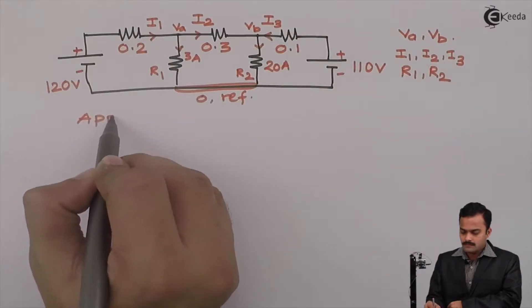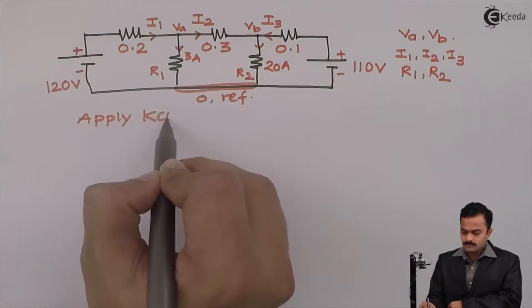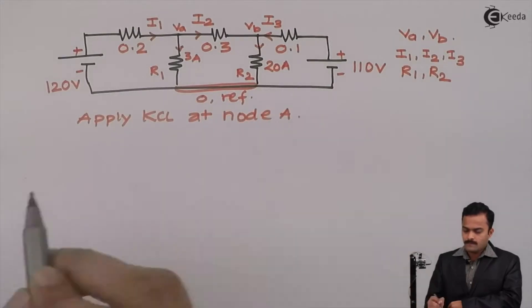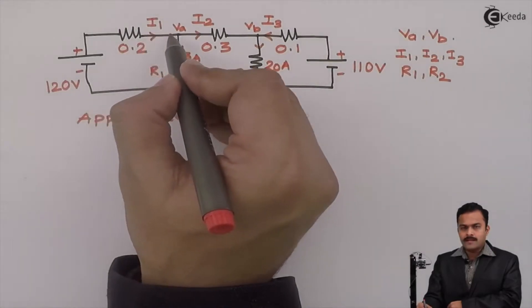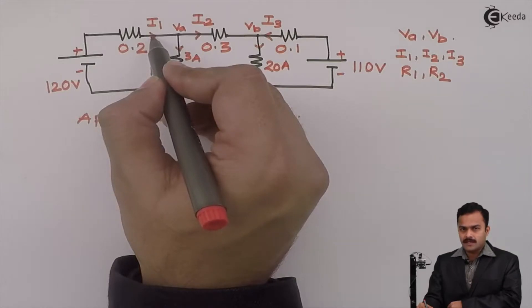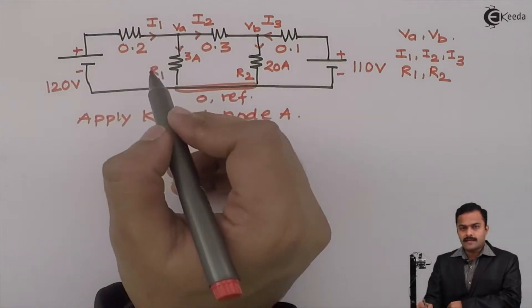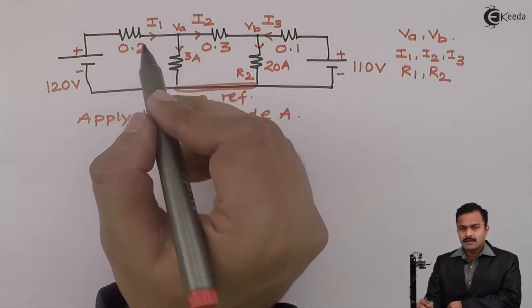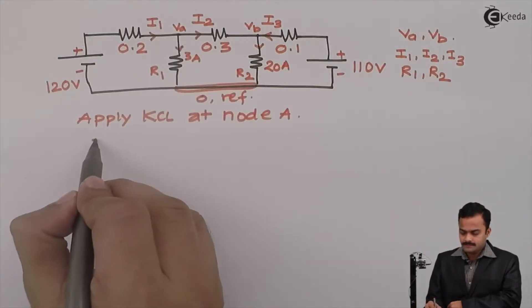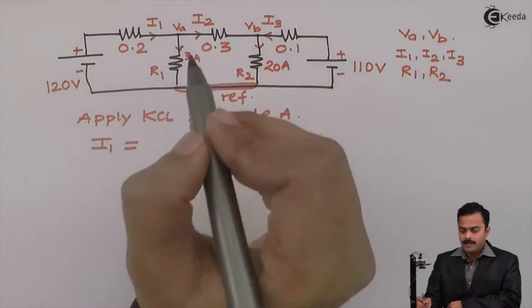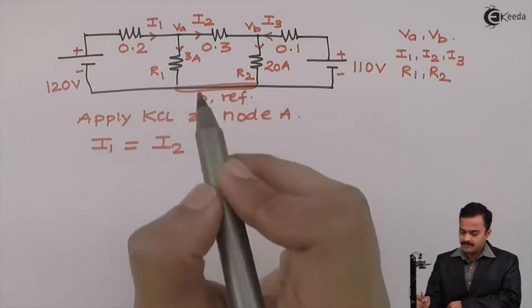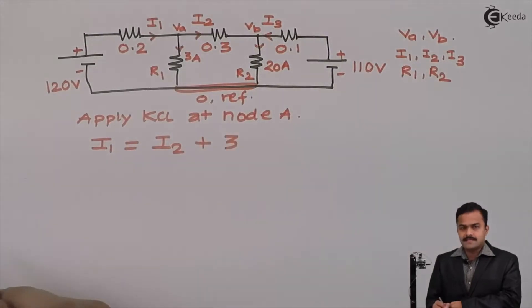Let's apply KCL at node A. For node A, I am having 1 incoming current and 2 outgoing currents. Before writing an equation, let's write the equation in terms of given values. Current I1 is incoming, I2 outgoing and this 3A is directly given. So, let's write plus 3 as it is.